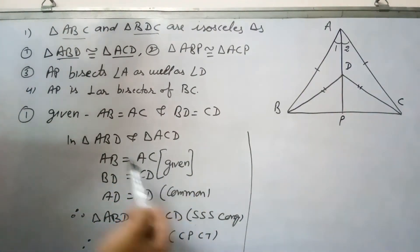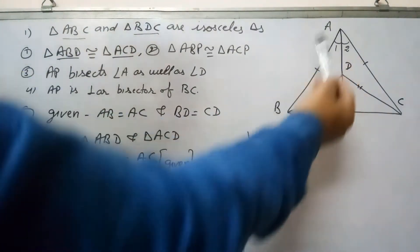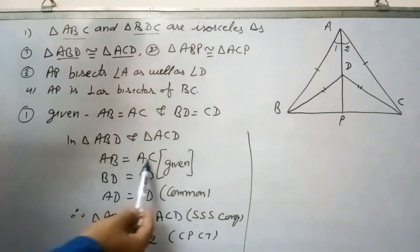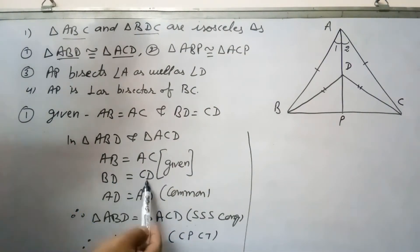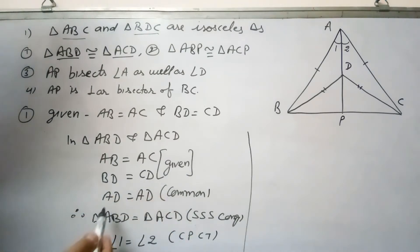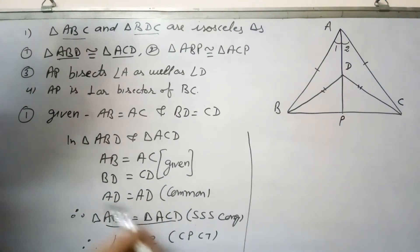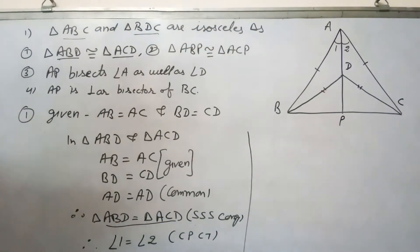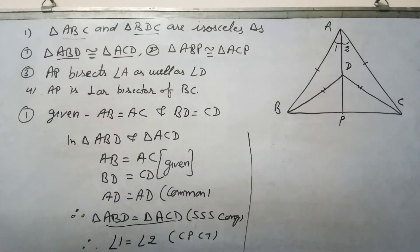In triangles ABD and ACD: AB equals AC (given), BD equals CD (given), and AD is common. So these triangles are congruent by Side-Side-Side congruency, and therefore angle 1 equals angle 2 — that is, AD bisects angle A.